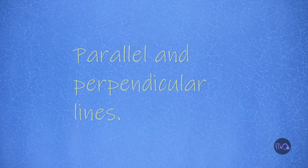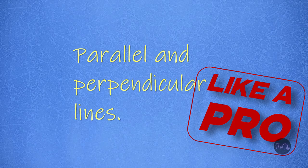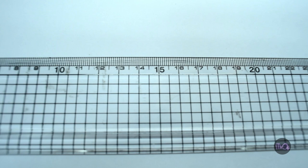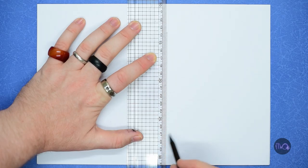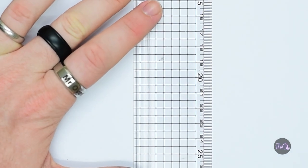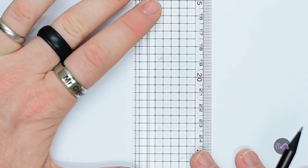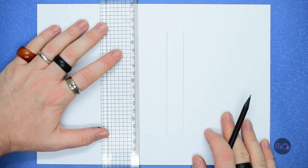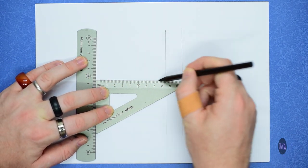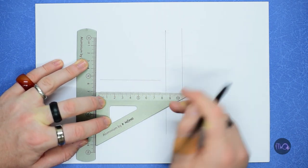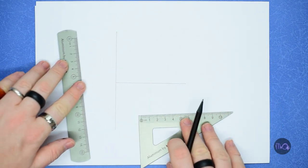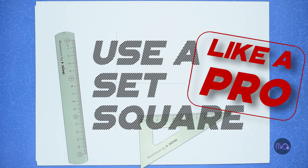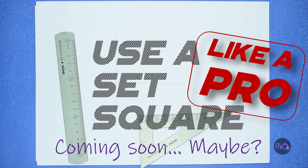Number eight: parallel and perpendicular lines. Rulers with extra marks on them, like this one, will help you to draw parallel lines. You can also draw parallel lines with a set square like this. Of course, a set square draws perpendicular lines too, but you'll have to wait for the Use a Set Square Like a Pro video from Mr. O, coming soon, maybe sometime.